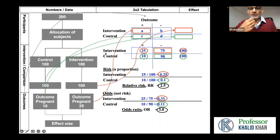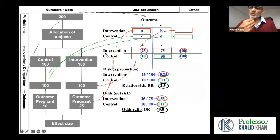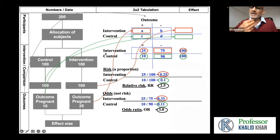One tip here: if your systematic review will include case control studies, in case control studies it is not possible to calculate relative risk. So in a systematic review that includes a meta-analysis of case control studies, it will be necessary for you to use odds ratio as a measure of effect.